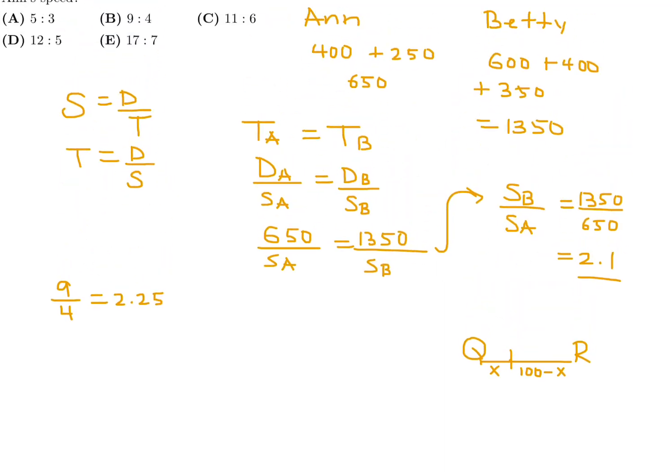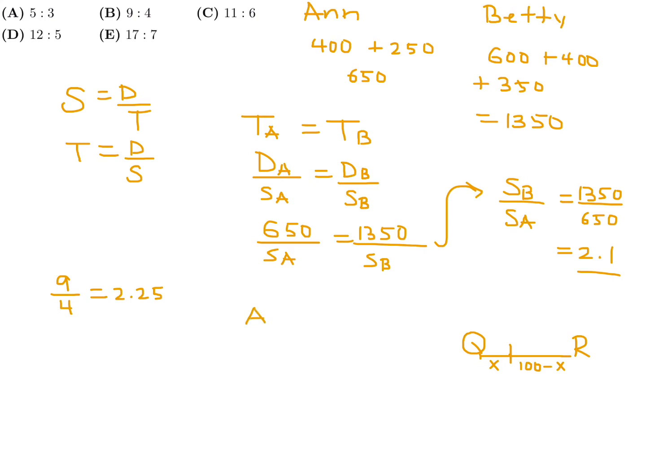So you do the exact same thing as before when you calculate the values for Ann and Betty. Ann would be 400 plus 200 plus 200 plus X this time, so that's 600 plus X. And then Betty, her calculation would be pretty much the same except for that X: 600 plus 400 plus 300 plus 100 minus X, so that actually comes out to 1400 minus X. So now let's figure out that ratio SB over SA, this guy right here. Now that would pretty much be 1400 minus X over 600 plus X.